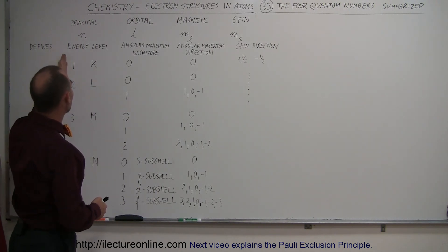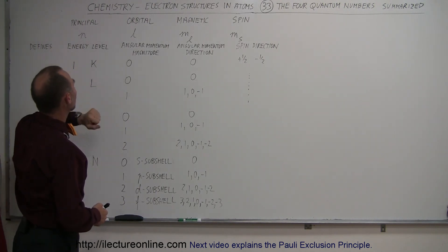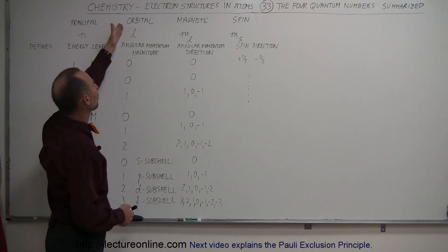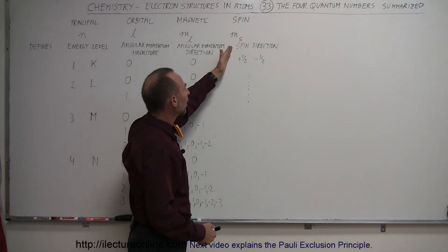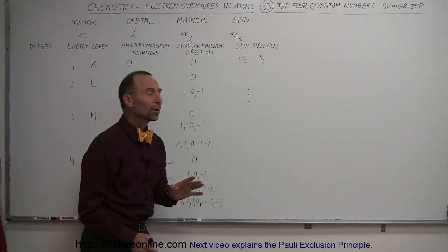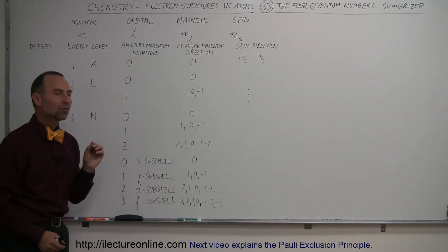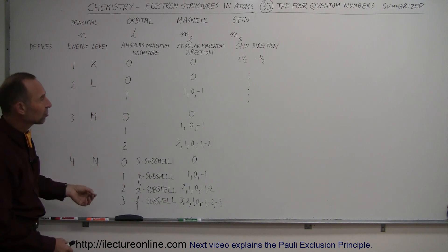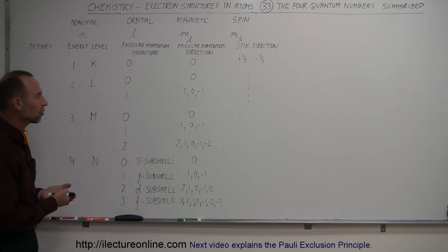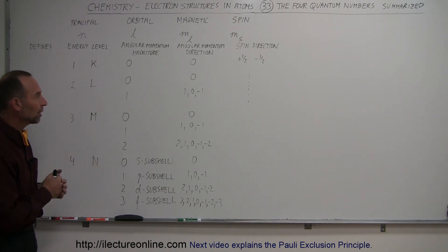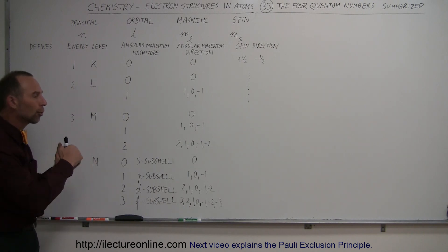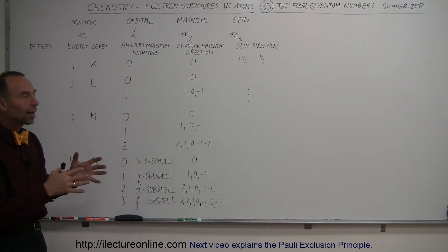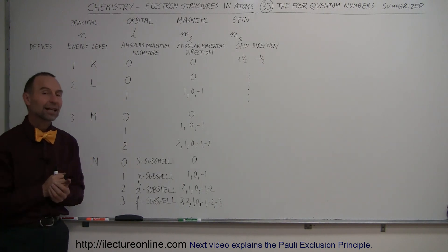So, four quantum numbers: energy level defined by the principal quantum number; the angular momentum magnitude defined by the orbital quantum number; the angular momentum direction defined by the magnetic quantum number; and the spin direction defined by the spin quantum number. Four quantum numbers defining the position, the orientation, the angular momentum, the direction, the energy level, and so forth of every electron in and around the nucleus of an atom. That's a nice little summary, and now we'll get into how electrons fill the orbitals and the shells around each nucleus of each atom, which we'll see in the next videos.